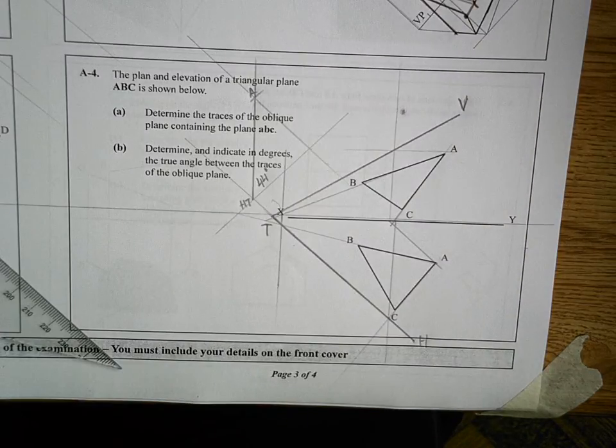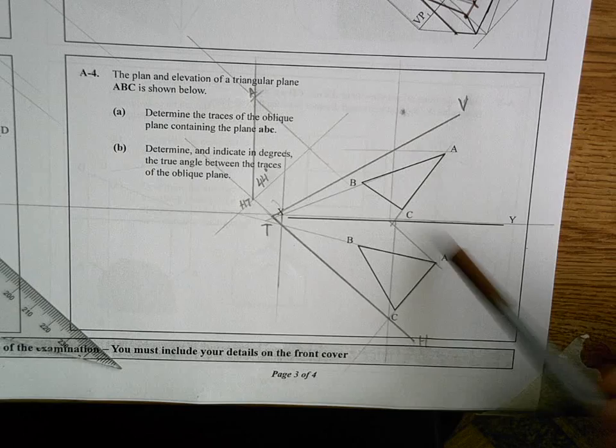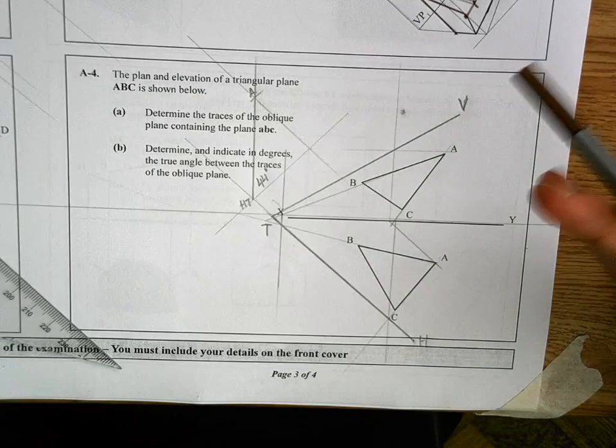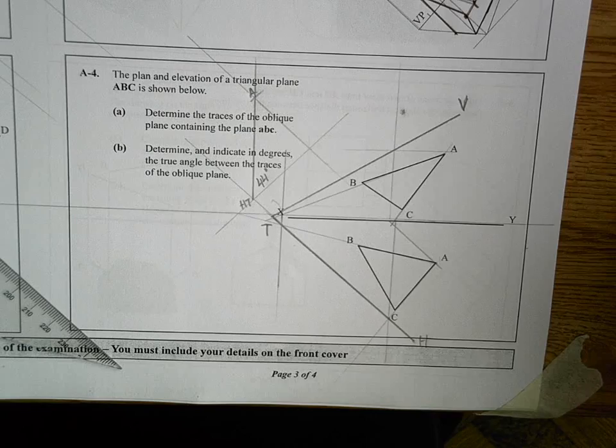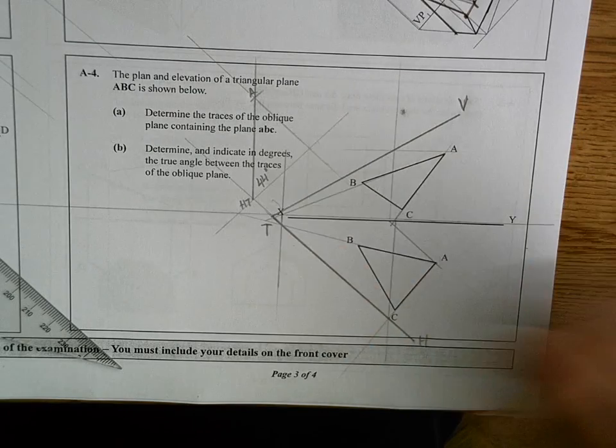Okay, so what we're asked here is we're given a lamina ABC, that's a three-point surface. It's floating in midair and it's pointing away from us. So the horizontal and vertical trace will be cutting inwards, we know that.